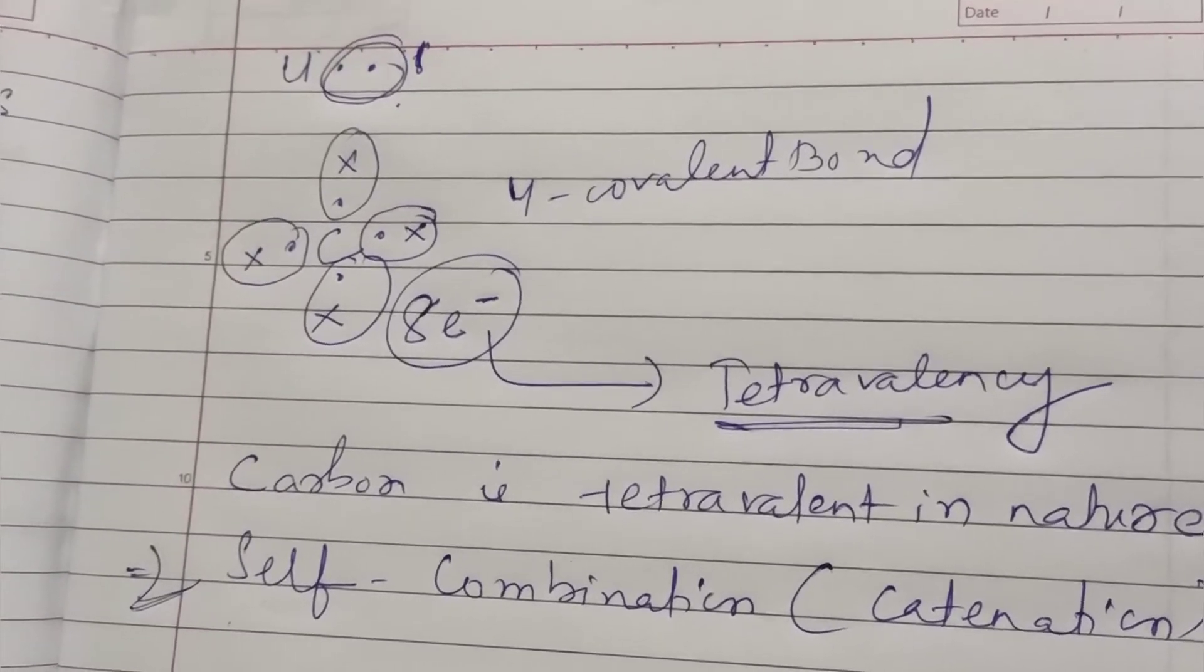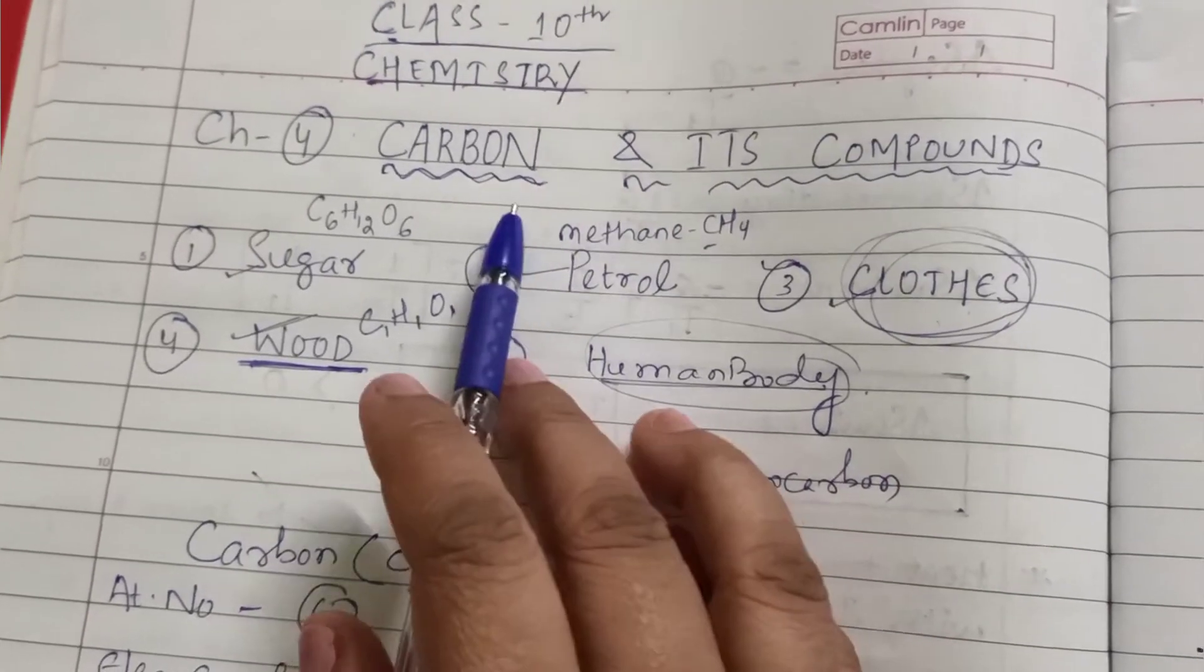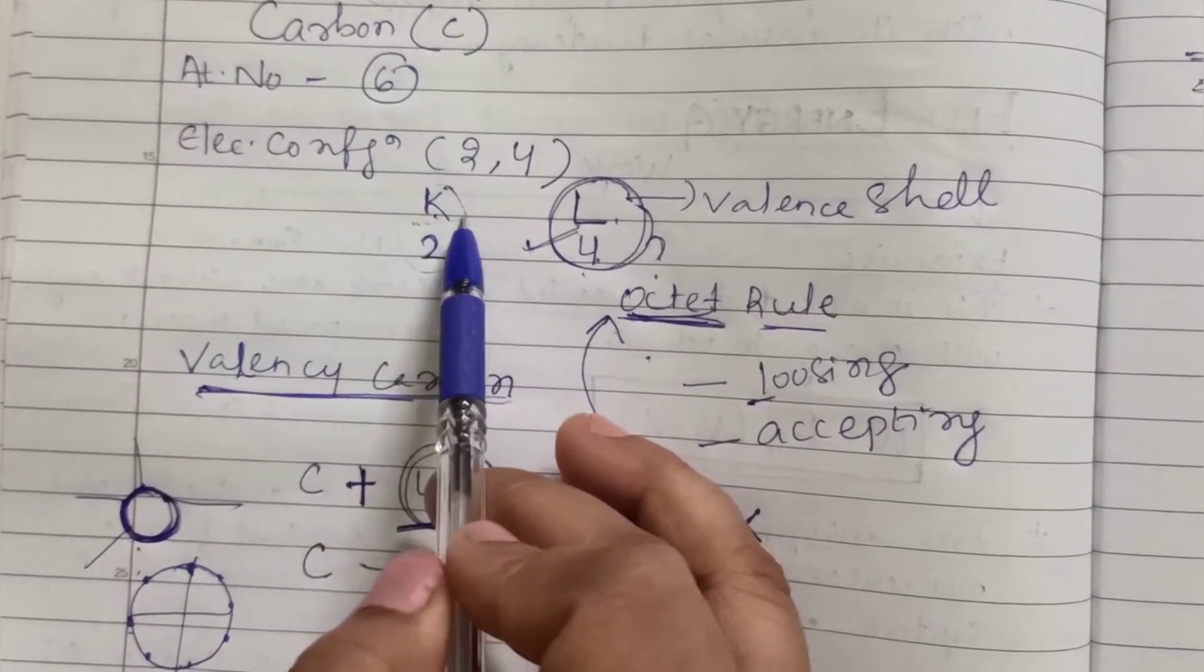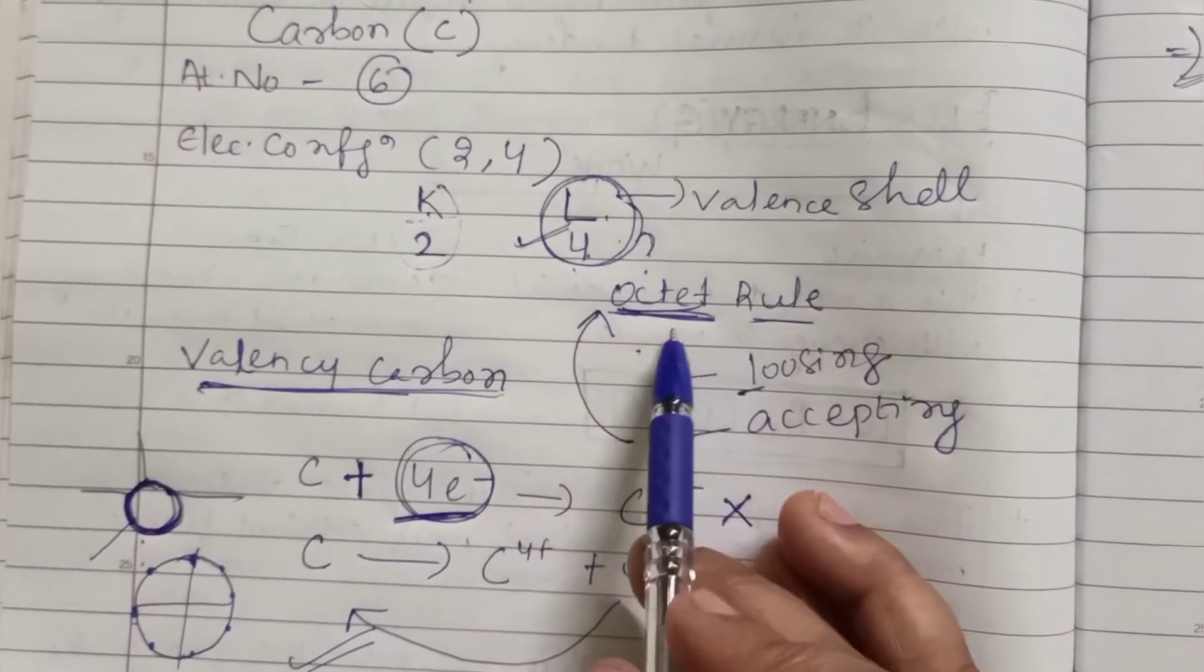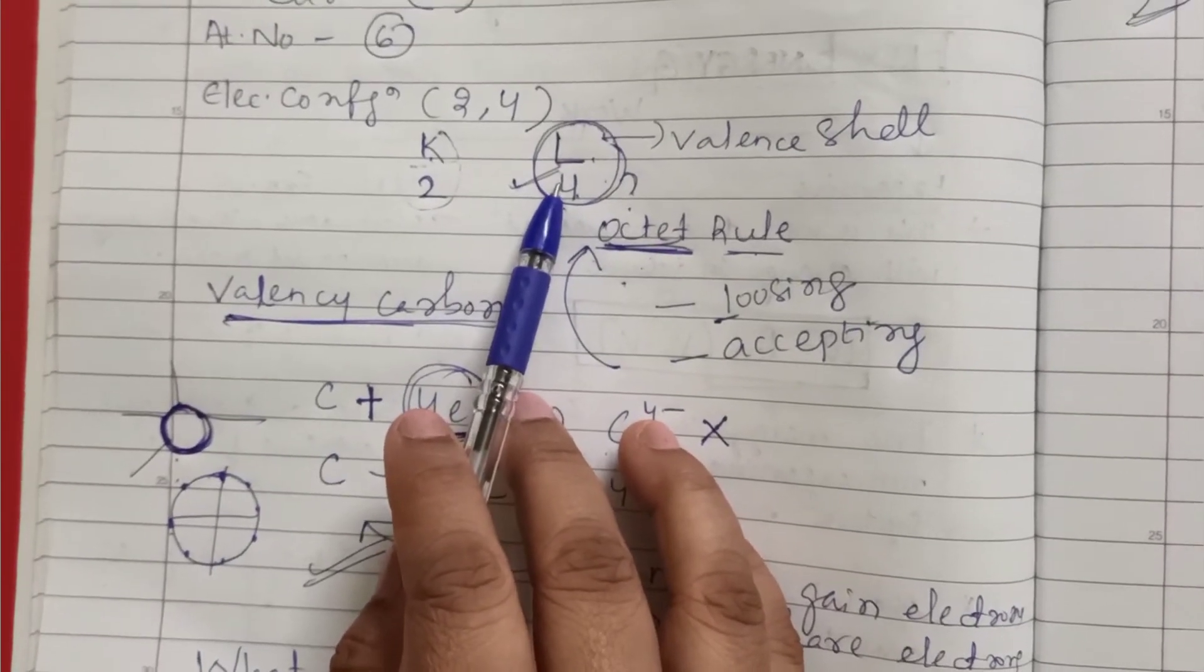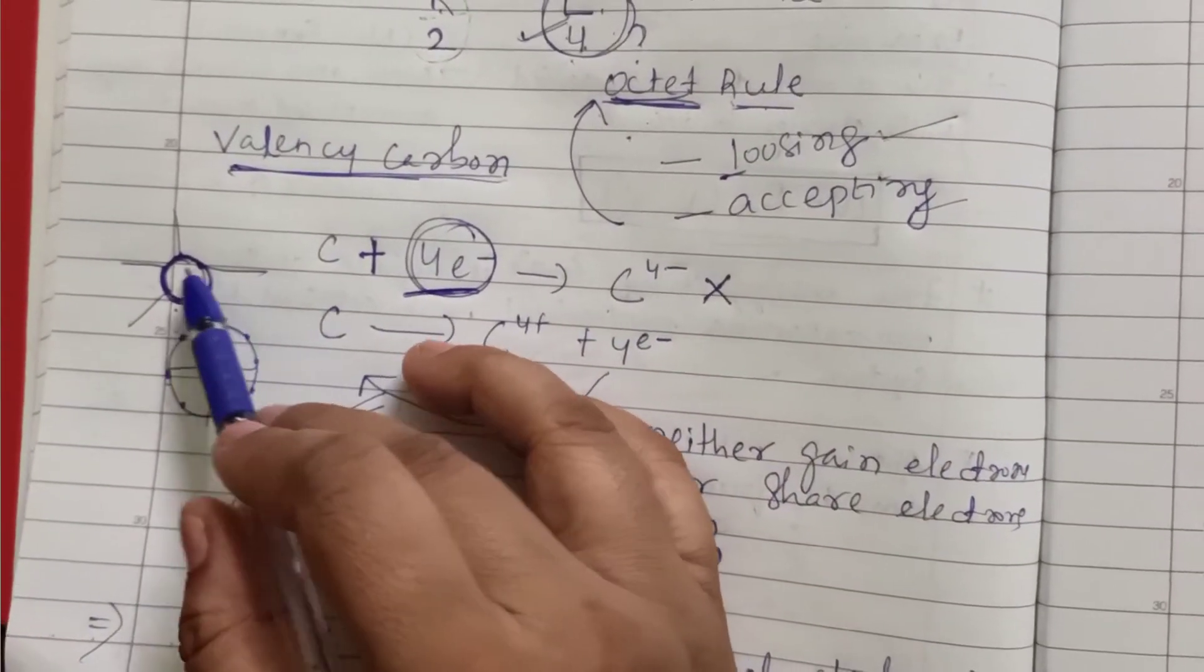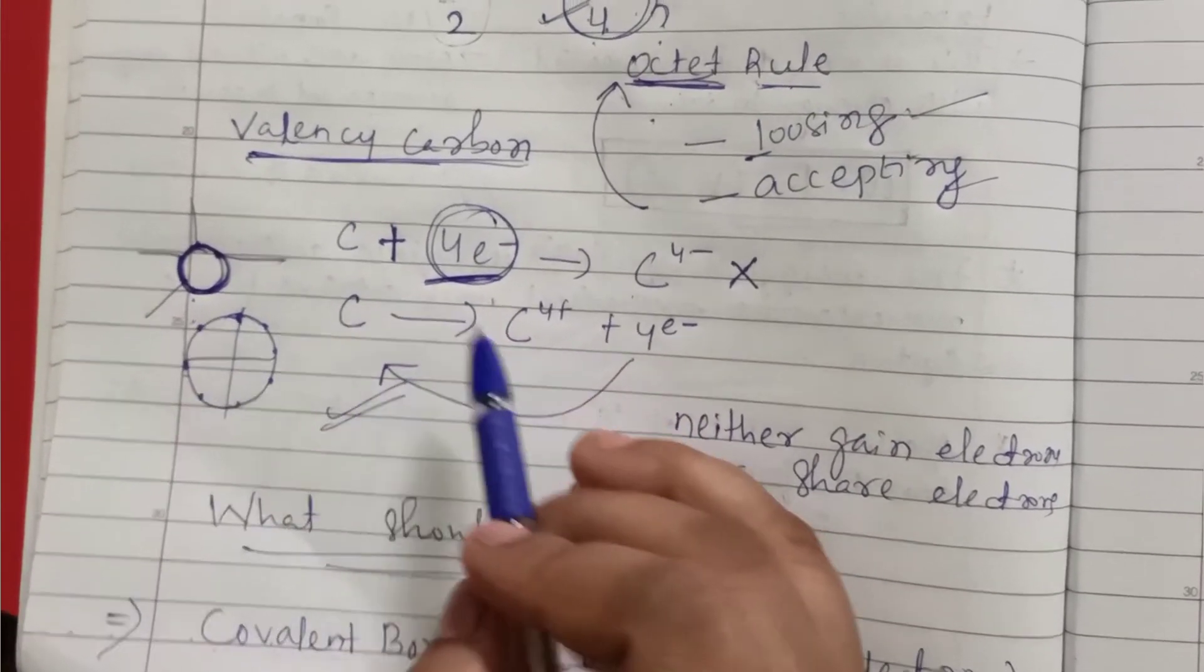Let me repeat it once again what we have discussed here. Carbon is an element which is present in all the substances, and it forms a vast number of compounds. Its atomic number is six. Due to six, its electronic configuration becomes 2 and 4. Therefore its K shell consists of two electrons and L shell consists of four electrons, which is the valence shell. But when we go through the octet rule, carbon is such an element which does not satisfy the octet rule. So what should carbon do to follow the octet rule? It is going to either lose the electrons or accept the electrons.